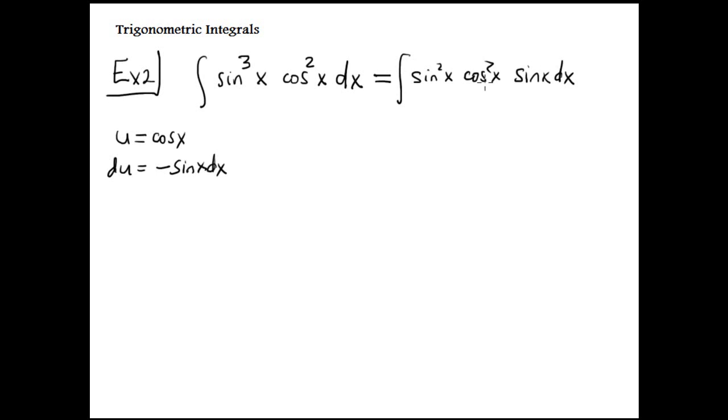Pythagorean identity. For example, this sine you replace by one minus cosine squared. This cosine squared is the same. And this is sine x dx by Pythagorean. Now let's go to the u substitution.